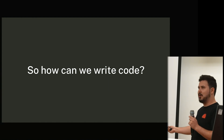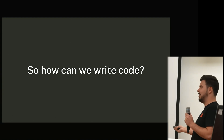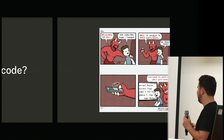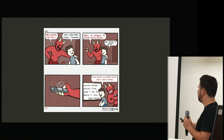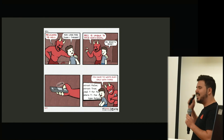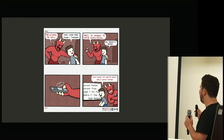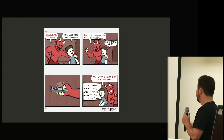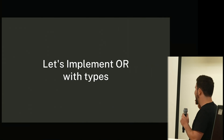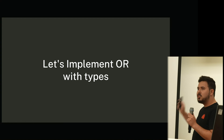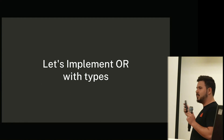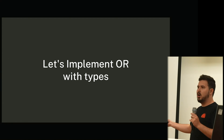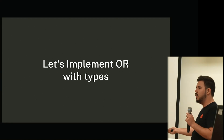Well, welcome to hell. Hell is unique to each individual — so what's mine? You have to write Rust only with types. So let's try and implement something simple first, like a logical OR. That's the idea of: false or false is false, but false or true is true, true or true is also true.